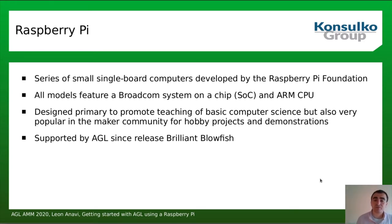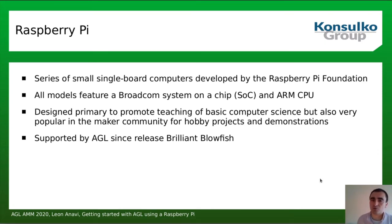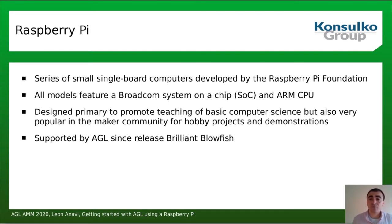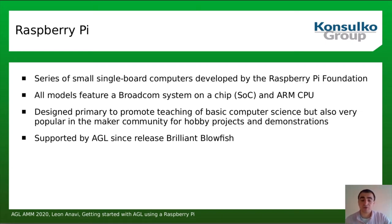The purpose of Raspberry Pi in AGL is to provide a low-cost platform with which people can easily get started with AGL and use it for demonstrations. Of course Raspberry Pi has constrained hardware which is not competitive to Renesas or other automotive-grade boards, but it's still a good choice for demonstrations. The first Raspberry Pi version supported by AGL — release Brilliant Blowfish — was Raspberry Pi 2.